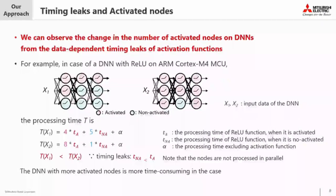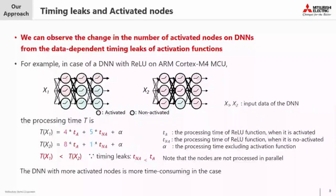For example, in the case of a DNN with ReLU, we can describe the processing time T according to input data X1 and X2. TX1 equals 4·TA plus 5·TNA plus alpha. TX2 equals 8·TA plus 1·TNA plus alpha. According to the timing leaks of ReLU, TX2 is longer than TX1. So a DNN with more activated nodes is more time-consuming.